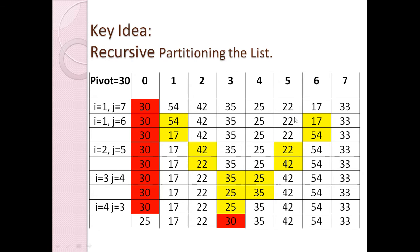So i equals one and j equals six — both have stopped. Then we swap these two elements: 17 will come to i's position and 54 will go to j's position. Now we move ahead with i plus plus.